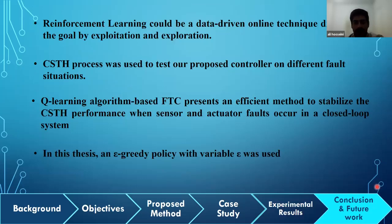Well, in conclusion, a Q-learning algorithm with epsilon-greedy policy is used in the fault-tolerant control strategy. The result is a data-driven online method which directs to the goal or set point without knowing any system dynamic characteristics that are difficult to understand at the beginning when a fault occurs. The CSTH process was used to test the control systems. The comparison results showed that Q-learning algorithm-based fault-tolerant control strategy presents an efficient method to stabilize the CSTH performance when sensor and actuator faults occur in a closed-loop system.